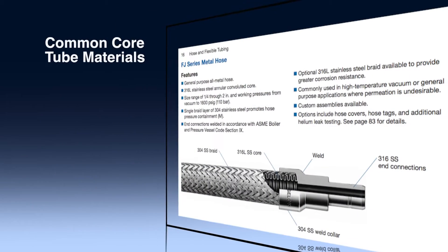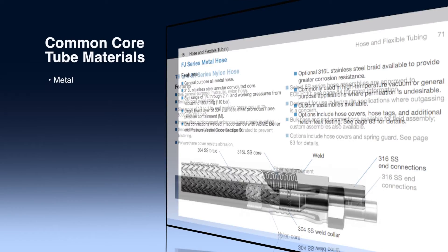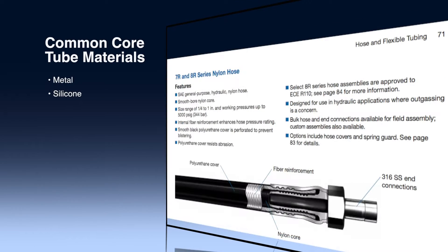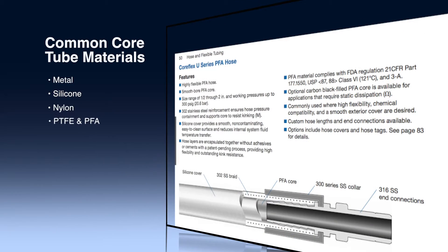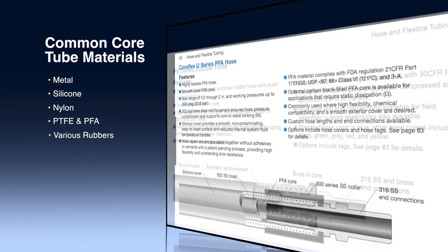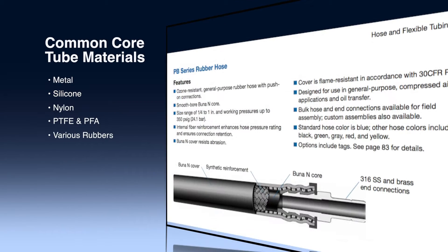Common core tube materials include metal, silicone, nylon, fluoropolymers like PTFE and PFA, and various rubbers.